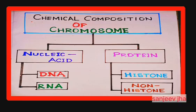Chromosomes are chemically made up of chromatin, and chromatin is made up of nucleic acid and protein. In our earlier class we discussed chromatids — chromatids are two symmetrical, longitudinally intertwisted filamentous structures. So chemically, chromosomes are composed of chromatids, and chromatids are composed of nucleic acid and protein.